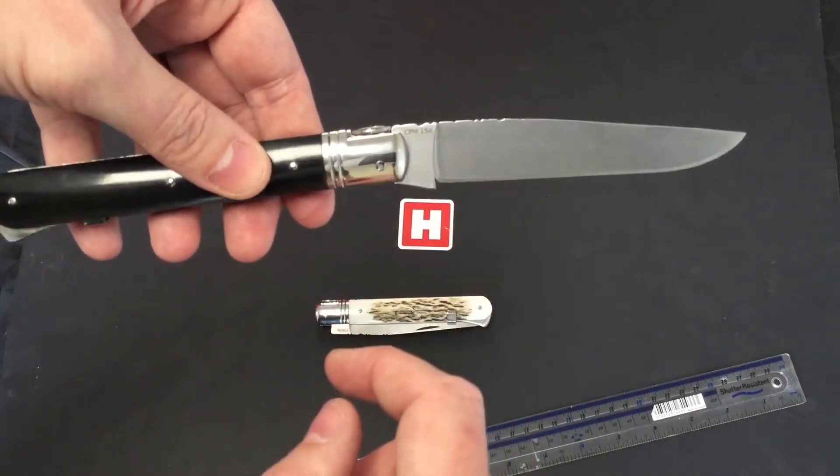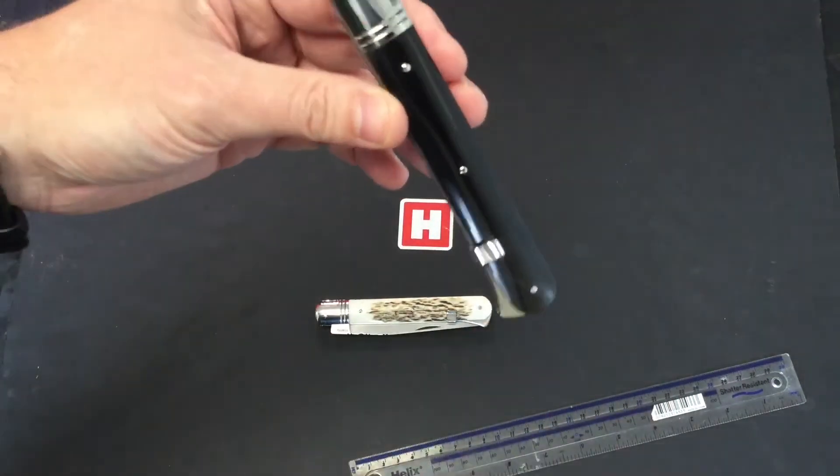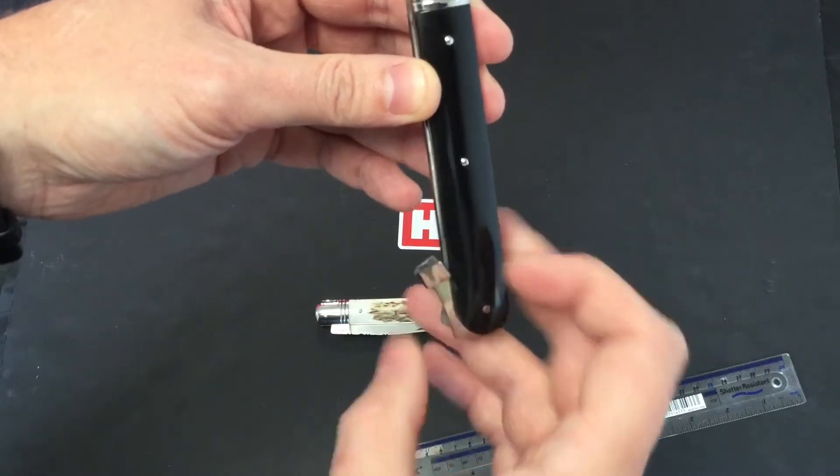Lovely flat ground with a secondary bevel on there. Now we come to this part to unlock it. It's a back lock with a safety catch.